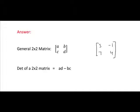So if we just apply this to the matrix that we have, which is 3, minus 1, 7, 4, you can see that A corresponds to 3, B corresponds to minus 1, C corresponds to 7, and D corresponds to 4.